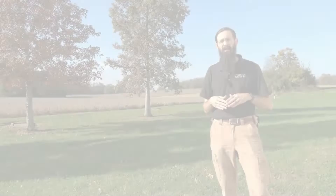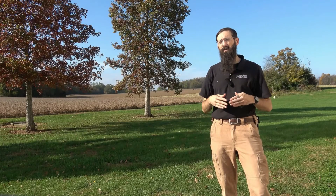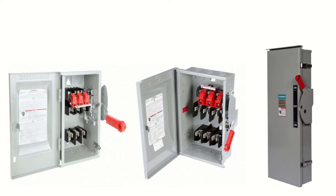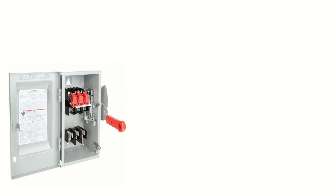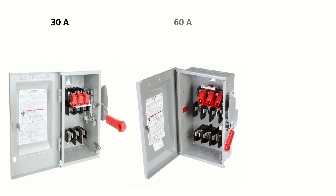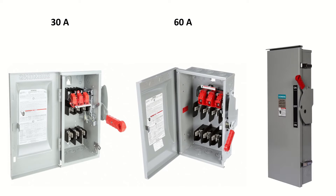Now that we've discussed these two options, we'll consider how to size and select appropriate disconnect switches for your system. Disconnects come in a number of different sizes or amperages, typically ranging from 30 to 800 amps. Most residential projects will deal with the 30 to 60 amp range, while larger consumption levels in multi-inverter situations will often deal with 100 amps or higher. Proper planning is necessary to determine the appropriate size for your system, which will be based on the size and power output of your PV system.